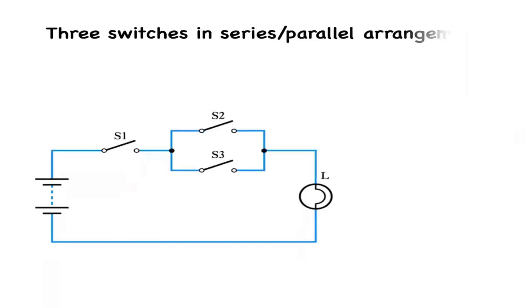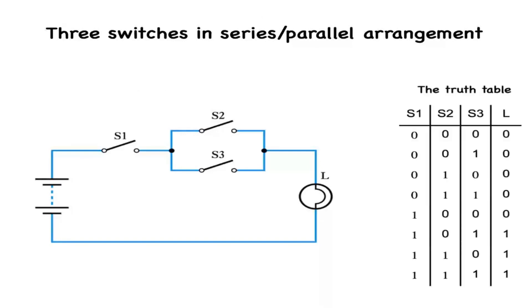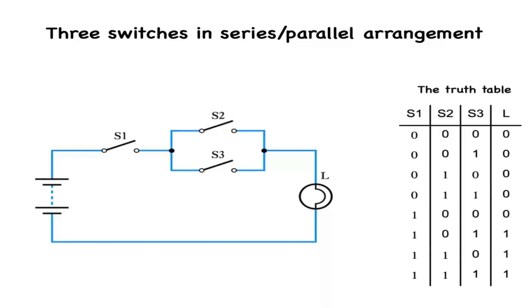Here is another binary arrangement with three switches, this time in a combination series-parallel arrangement, which generates the truth table. The logic of these three switches can be described by the equation: L equals S1 AND the quantity (S2 OR S3).